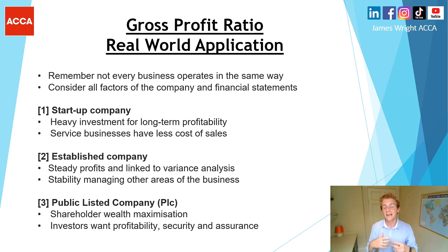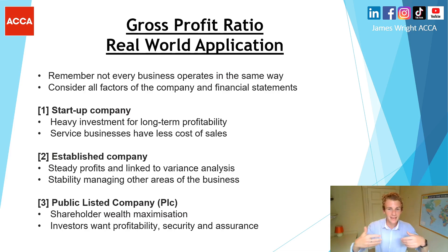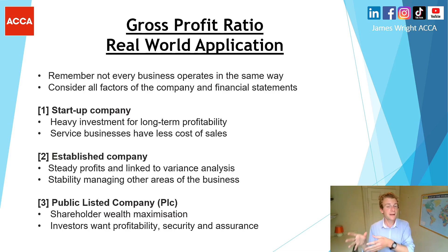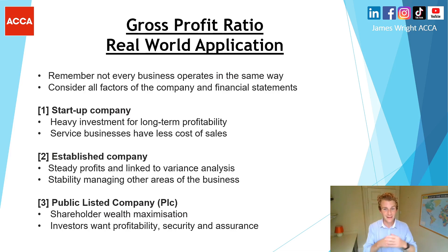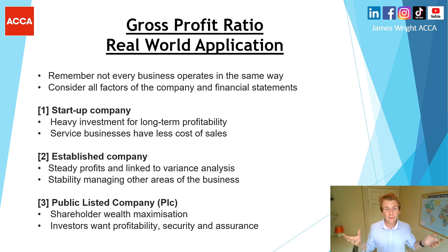This comes down to the real-world application. Try to write down in your own notes a type of business you're comfortable discussing, because not every business operates the same way. For example, a car manufacturing plant — I can picture cars on a production line with several manufacturing areas, and this is where I can differentiate between direct costs and indirect costs. You also need to consider other factors in the financial statements, because the gross profit ratio has a knock-on effect on other areas of annual reports involving internal and external stakeholders.